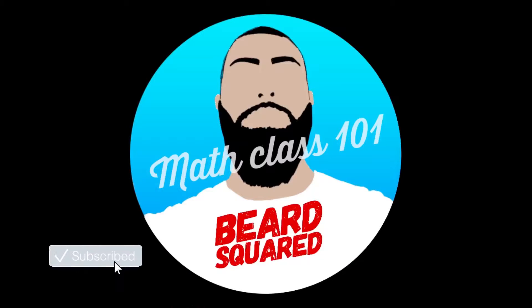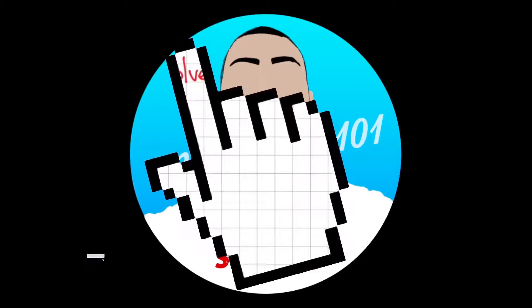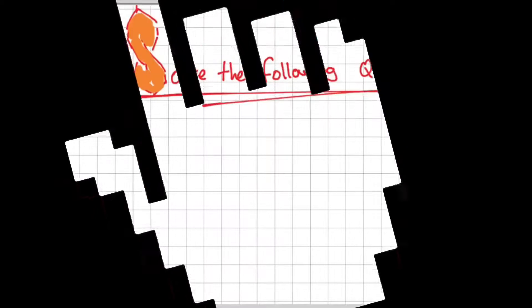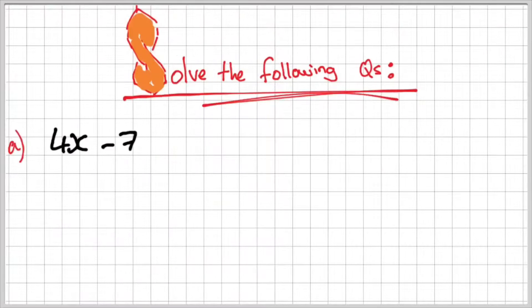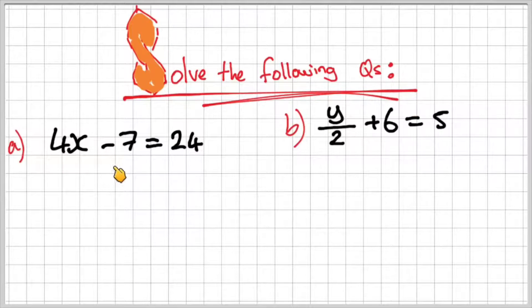Pause the video here and try the following questions for yourself. Solve to find the value of x: 4x minus 7 is equal to 24, and y over 2 plus 6 is equal to 51.